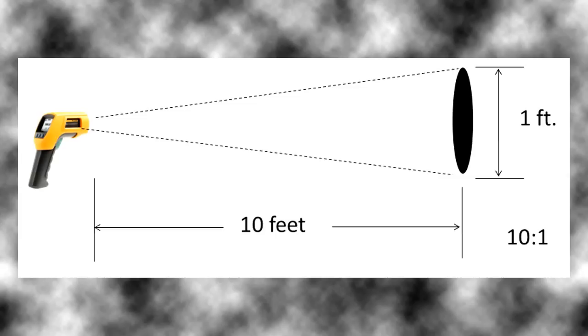The laser would be pointed at the center of this 1 foot diameter circle, and the IR thermometer would be measuring the average temperature of that circle.